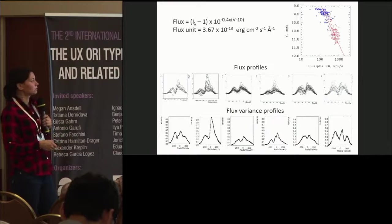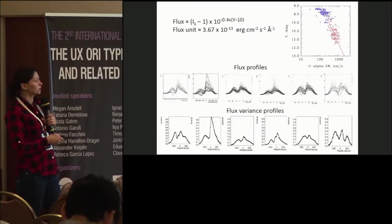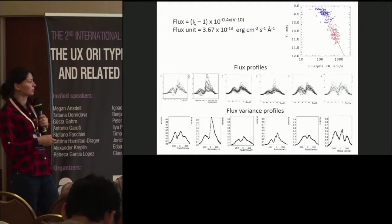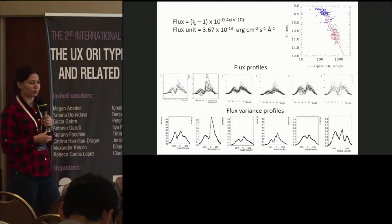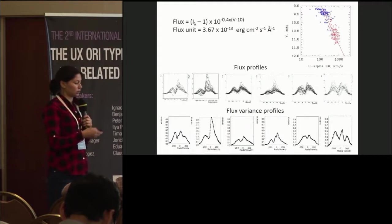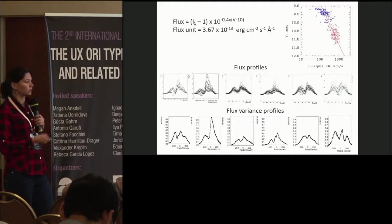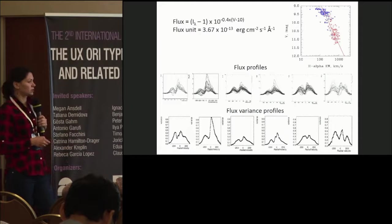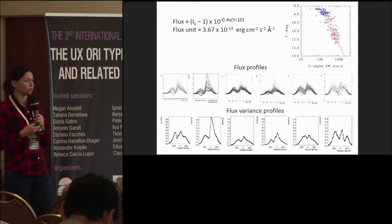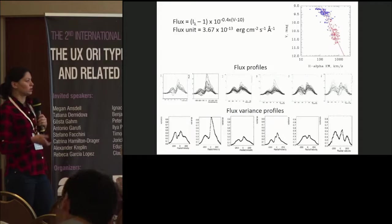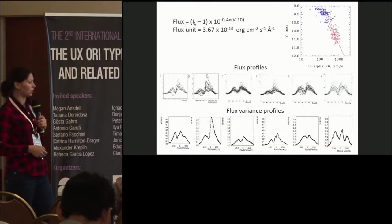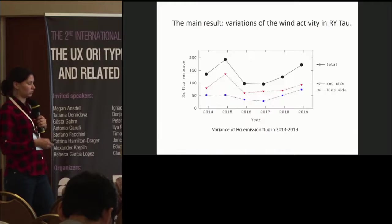Here we can see changing flux profiles for each season of our observations. And then we calculated variance profiles for each season to see which part of the line profile is changing mostly and what is the amount of its variability. And here is the main result of our work so far.